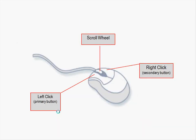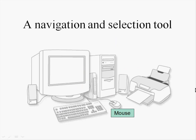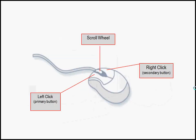The mouse is the other main way you tell the computer what to do. As stated earlier, the mouse is a navigation and selection tool — along with the keyboard, it's one of the two ways to tell your computer what to do. The mouse is usually connected by wire, though wireless mice are becoming more common and work the same way.